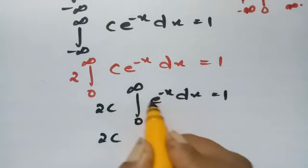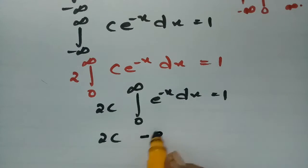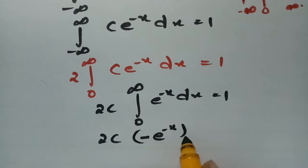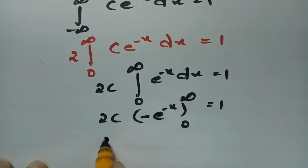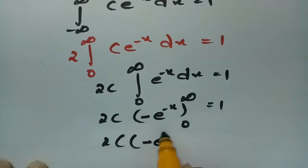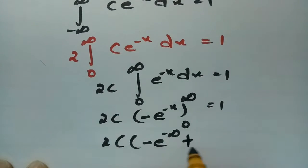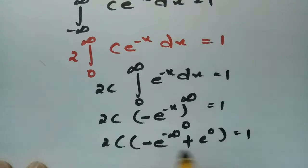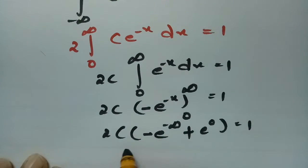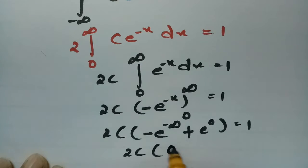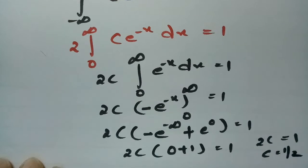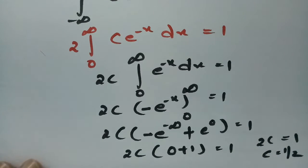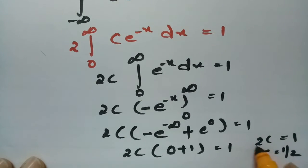The integration of e^(-x) gives minus e^(-x). Evaluating between limits 0 to infinity: 2c times [minus e^(-infinity) minus (minus e^0)] equals 1. Since e^(-infinity) = 0 and e^0 = 1, this gives 2c times (0 + 1) = 1, so 2c = 1 and therefore c = 1/2. This is what we needed to show.